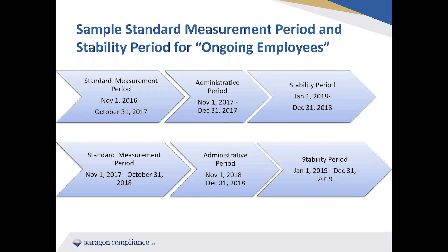Your next standard measurement period begins November 1, 2017 and runs through October 31, 2018. There's never a lapse or gap during your standard measurement period — once you finish one, your employees are tracked starting right on the 1st of the next measurement period. We then have our administrative period and following stability period, January 1, 2019 through December 31, 2019. Those ACA statuses are based on that standard measurement period beginning November 1, 2017.